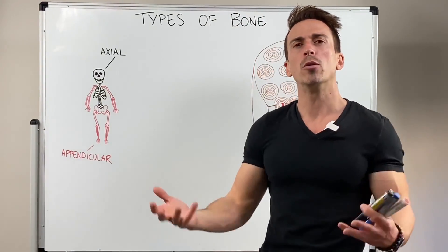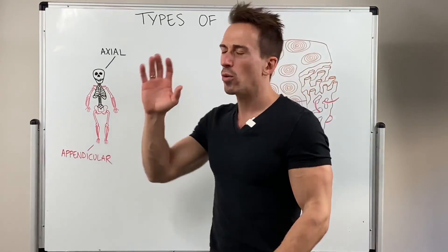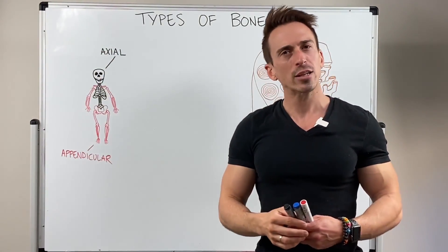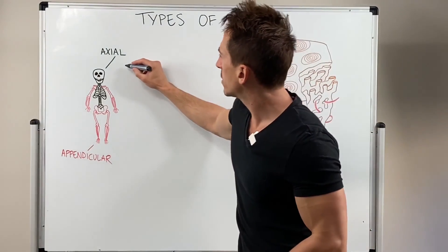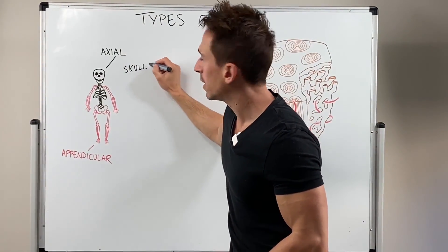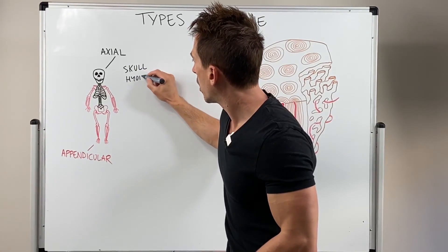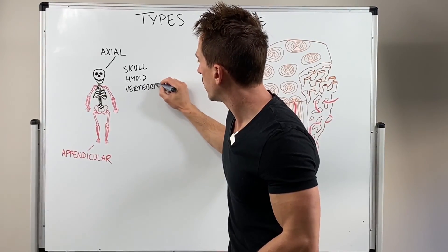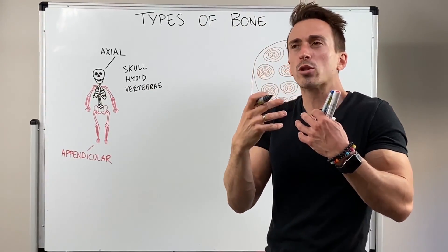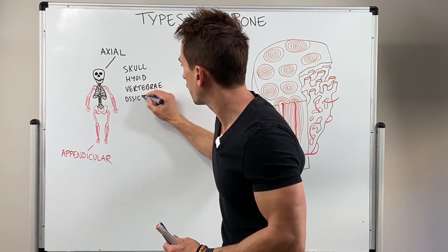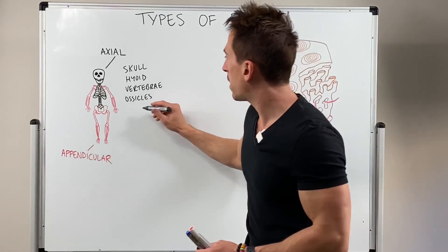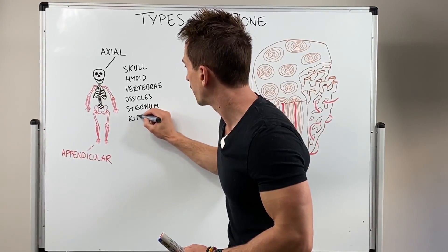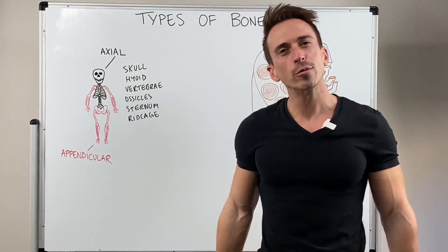Basically everything that holds and moves the limbs, or the limbs themselves. So more specifically, we have 206 bones for the whole skeleton. The axial skeleton is made up of the skull, the hyoid, the vertebrae, the ossicles of the middle ear, the sternum, and the rib cage.